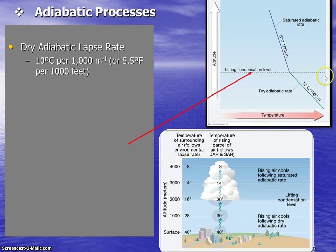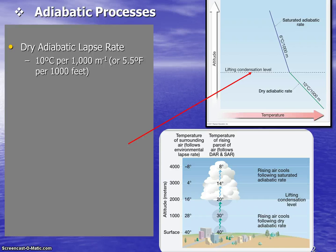If dry air is rising, it's going to cool at the dry adiabatic lapse rate, which is 10 degrees Celsius per 1000 meters. If you wanted to use Fahrenheit to determine temperature differences between elevations, you could use the rate of 5.5 degrees Fahrenheit per 1000 feet.